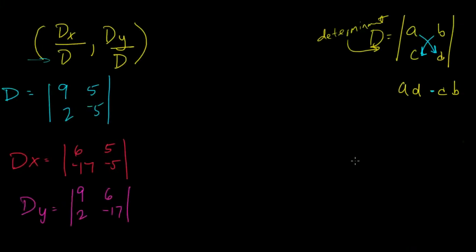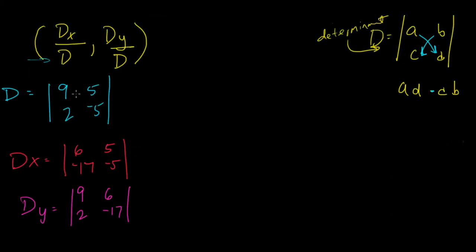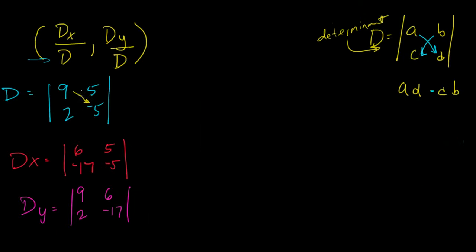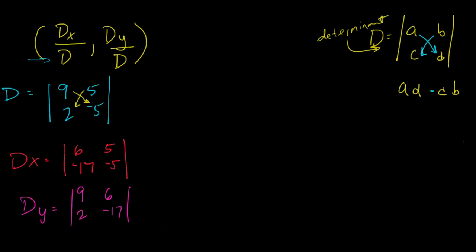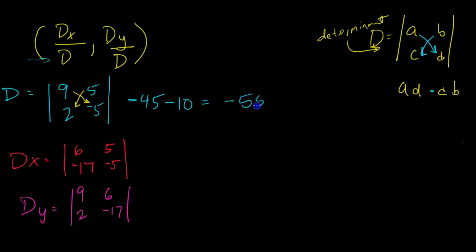Now remembering that the determinants are the a times the d minus the c times the b, I can just multiply these two numbers and then subtract the product of those two numbers. So what I've got is negative 45 minus 10, which gives me negative 55.